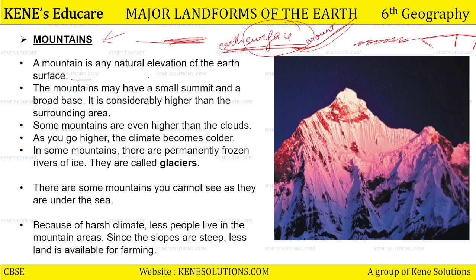A mountain is any natural elevation of the earth surface. The mountains may have a small summit and a broad base. It is considerably higher than the surrounding area — mountains apne aspas ke area se generally thoday se higher hoote hai, islaya wunne mountain kehte hai. They are considerably higher than the surrounding area, that is why they are known as mountains, because you have to mount them. Some mountains are even higher than the clouds — kuch mountains toh itne uche hoote hai ki clouds agar yahaan form ho chukhe hai already, aur mountain ke height abhi bhi bhahti chalhi ja raha hai.